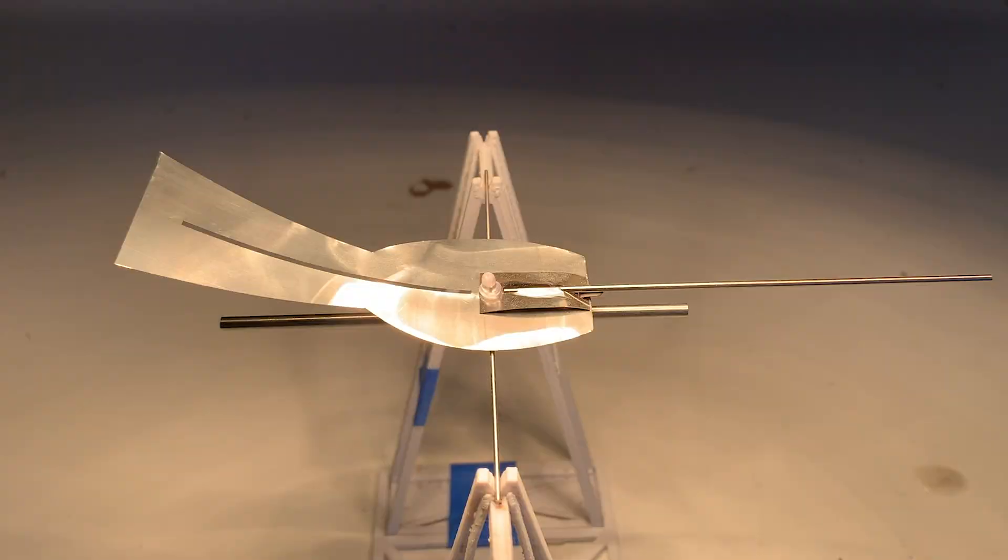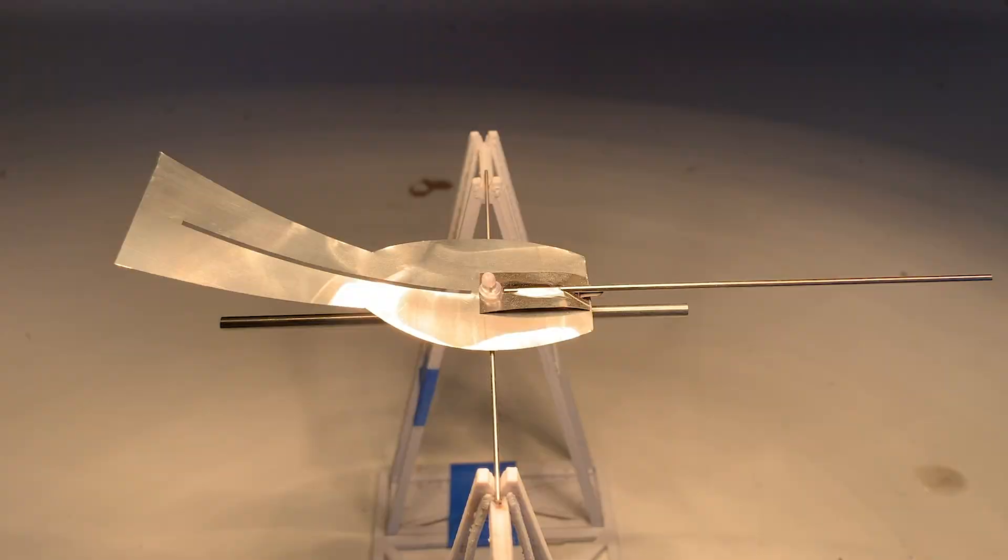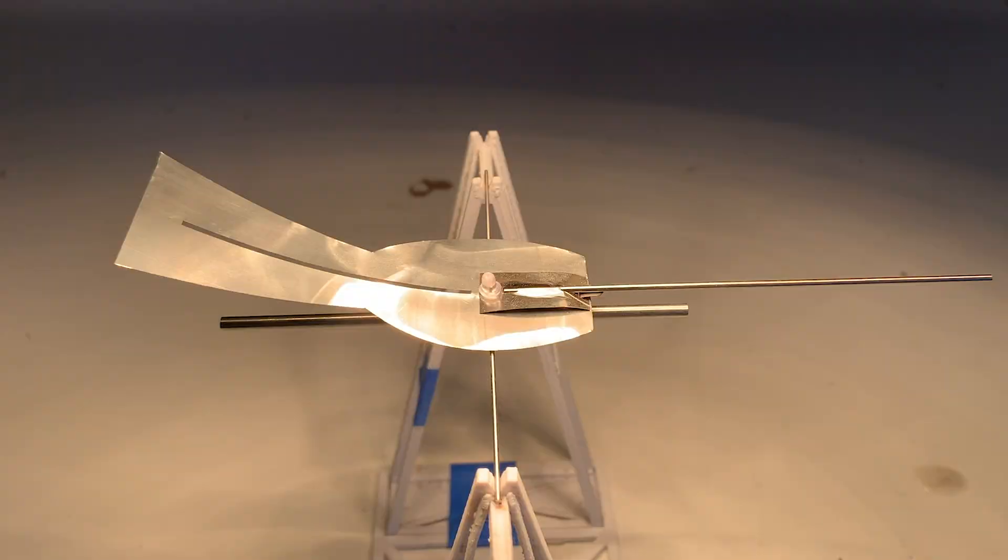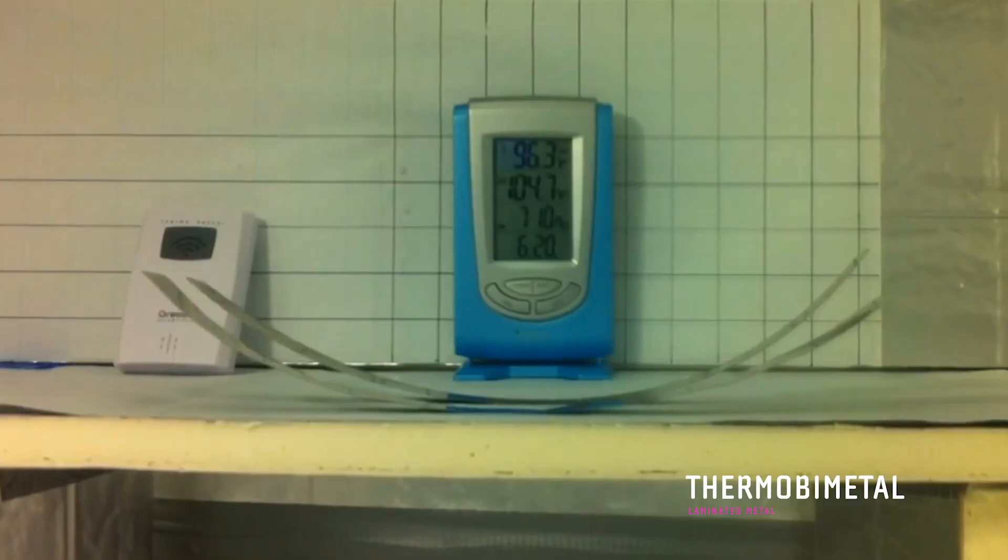The material that I work with is called thermal bimetal. It's a lamination of two layers of metal together that expand at different rates. So what happens when the temperature goes up, it curls.